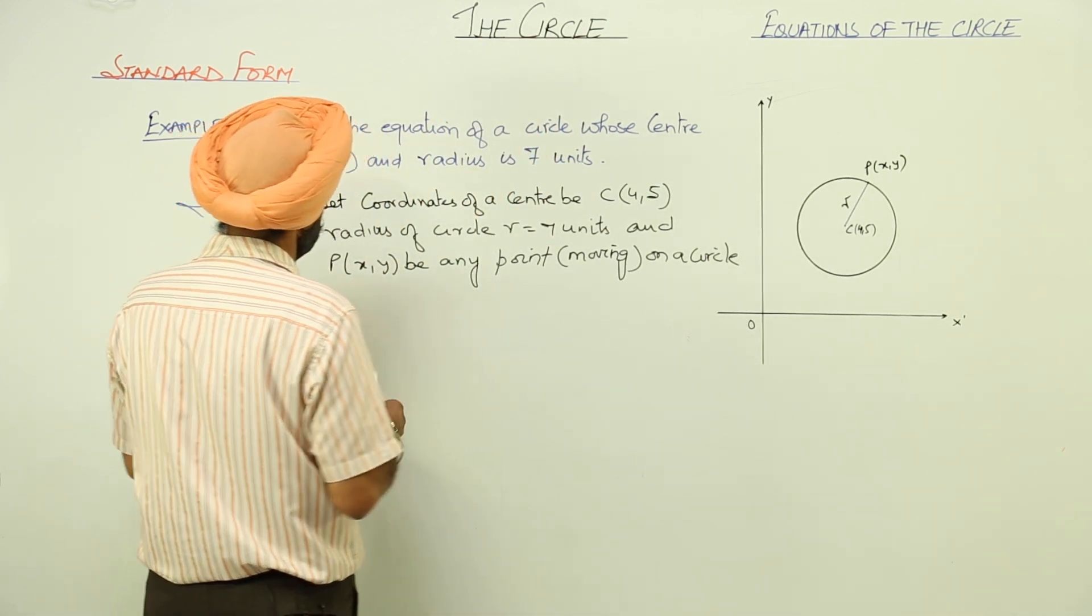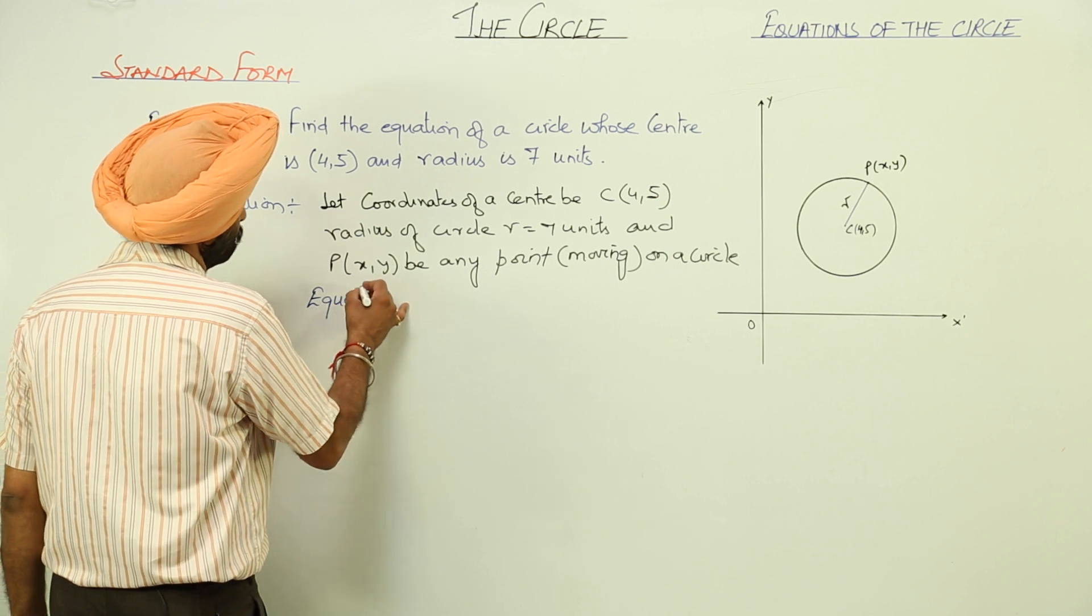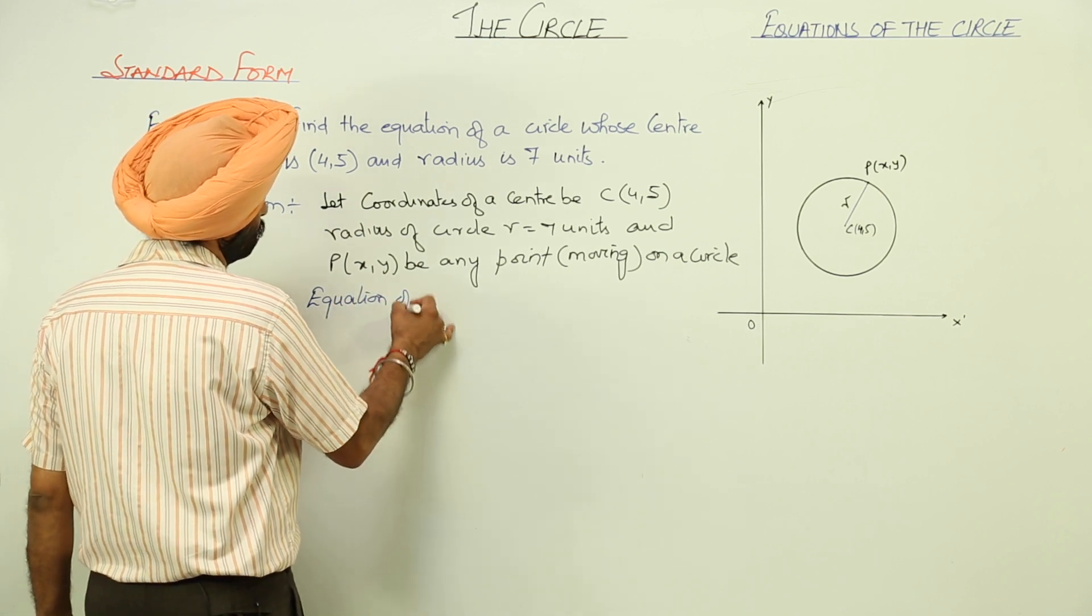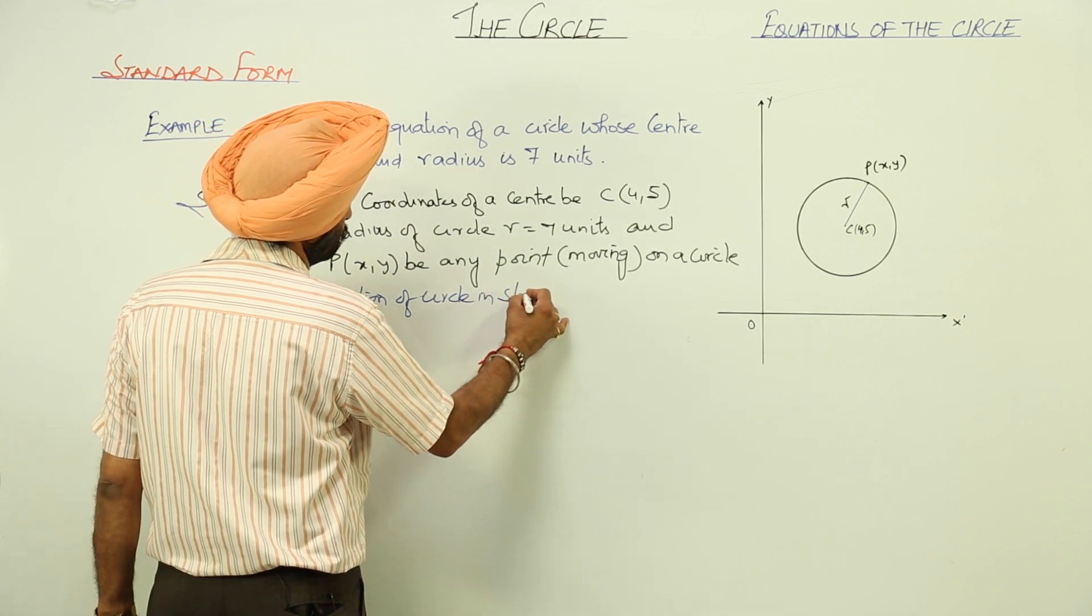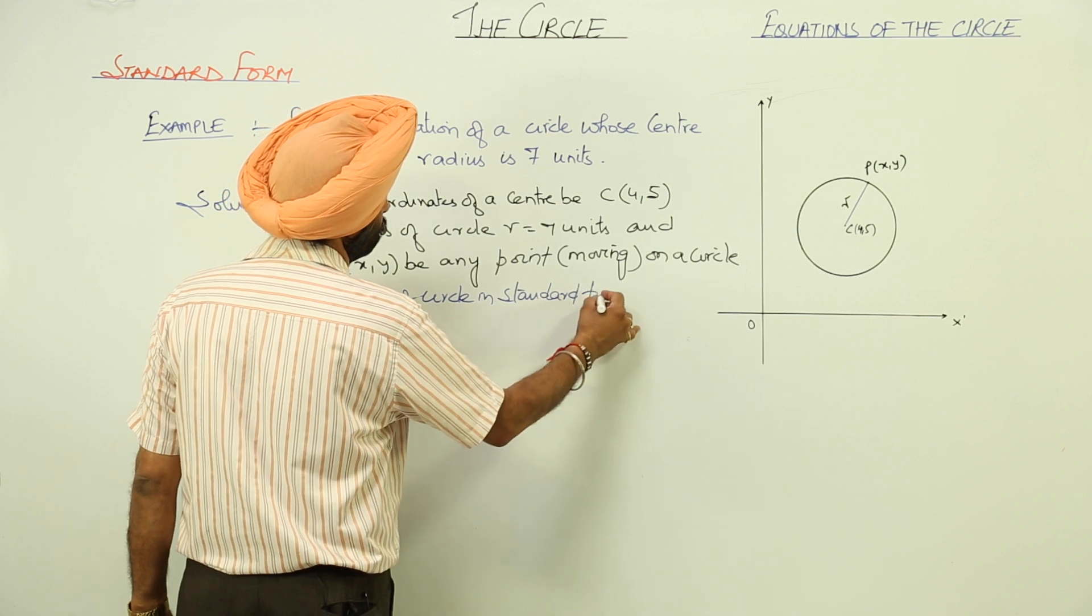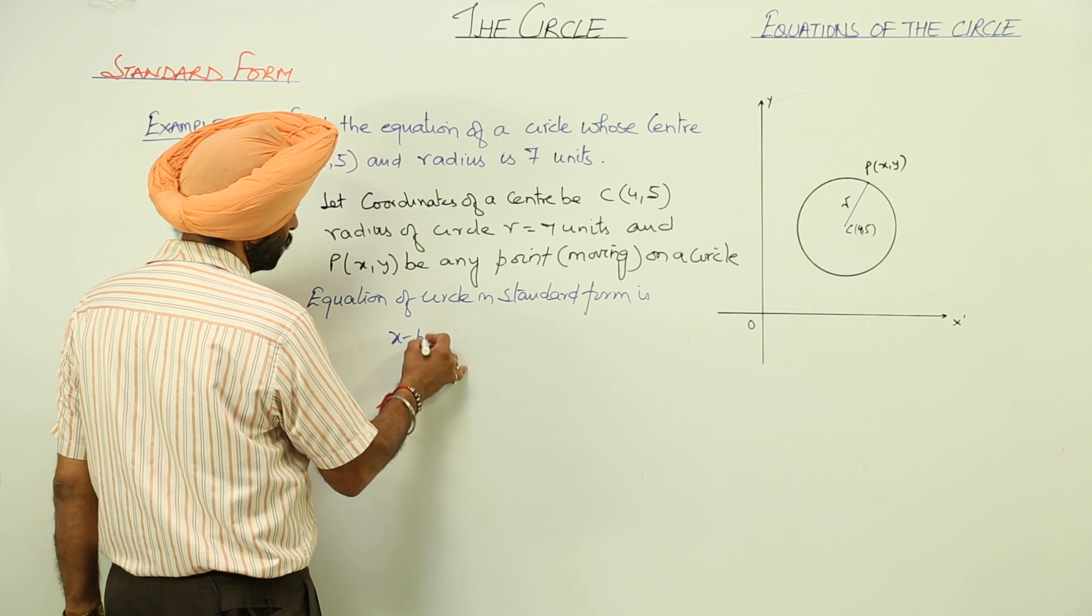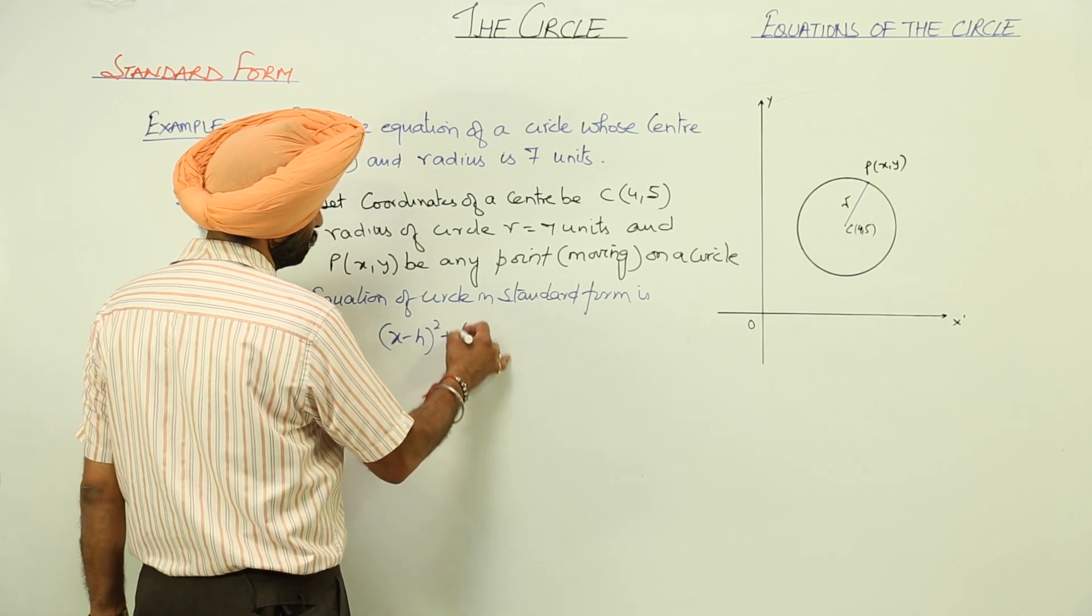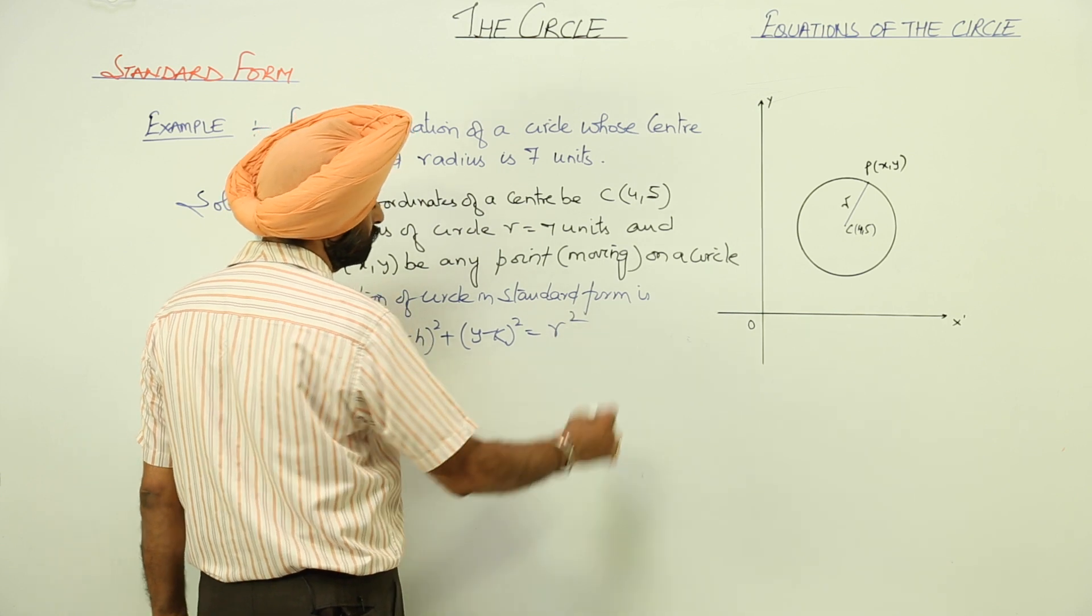Now, the equation of circle in standard form is (x-h)² + (y-k)² = r².